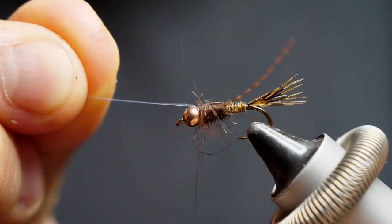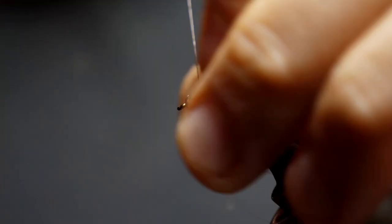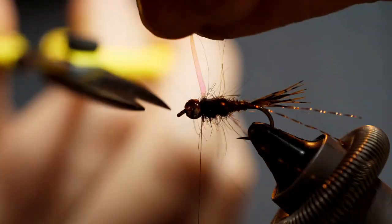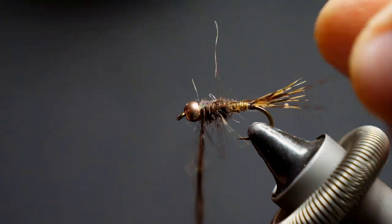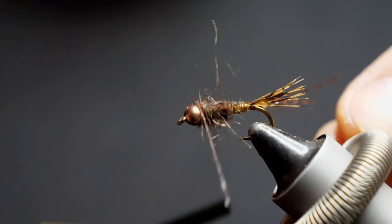So now all we do is simply fold the flash back in front. I screwed it up the first time there, but there we go, try again. Fold it back on itself to lock it in place, and then clip off the excess. And it gives us that air bubble and that little bit of flash on the back.